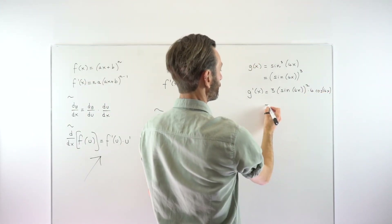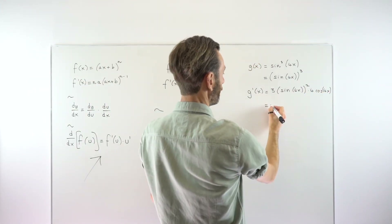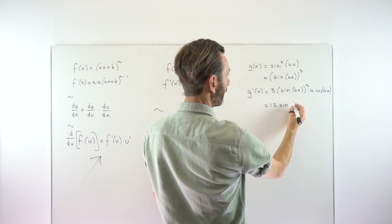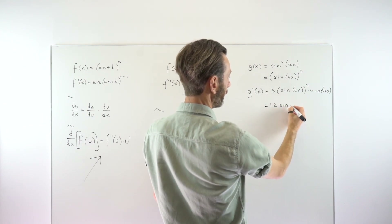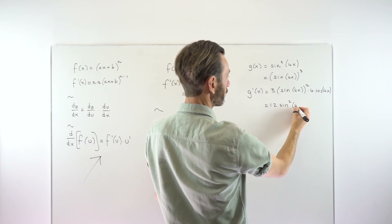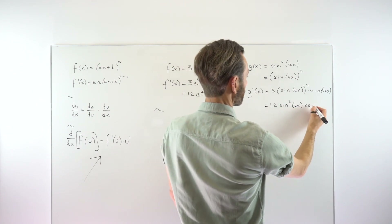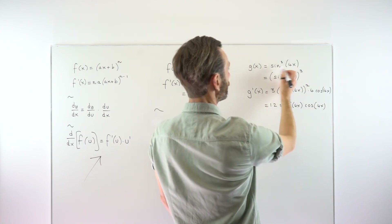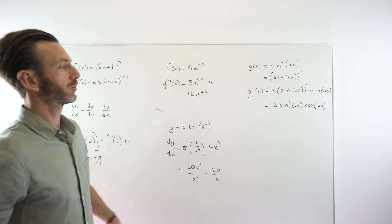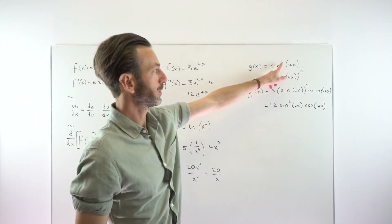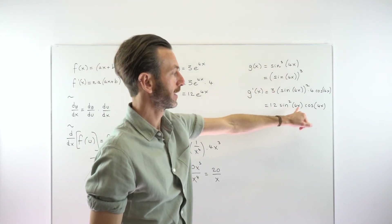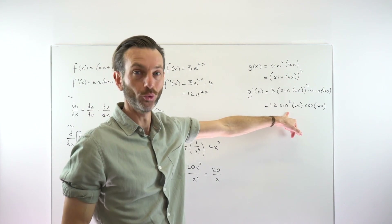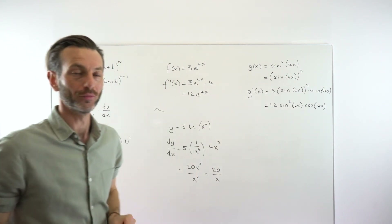Tidying up: 4 times 3 is 12, so we get 12sin^2(4x) times cos(4x). These examples are not super common, but if you do come across a sine or cosine with a power, you should expect a final answer containing two trigonometric functions — that will always happen in that type of example.